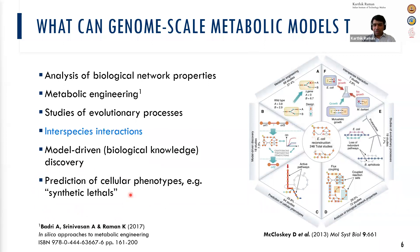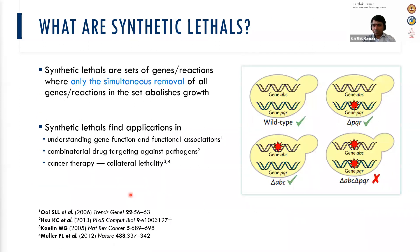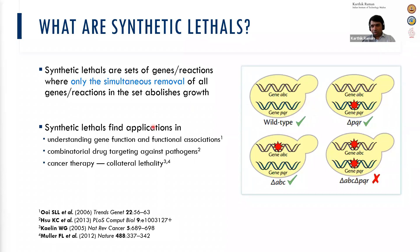I'm going to move over to synthetic lethals, which is really interesting. These are sets of genes or reactions where only the simultaneous removal causes growth arrest. For example, if you remove a single gene like PQR or ABC, the cell still grows. But when you remove both ABC and PQR simultaneously, the organism dies. This means perhaps these two genes are compensating for each other, or there are parallel pathways where removing either gene disrupts those parallel pathways.